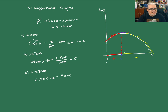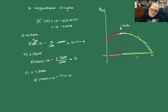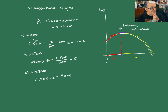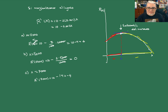¿Qué está queriendo decir esto? Tienes una velocidad creciente de los ingresos y luego empieza a desacelerarse. ¿Por qué? Porque en ese punto saturaste el mercado — alcanzaste el límite de la demanda, y entonces la mercancía se va a empezar a vender cada vez menos.